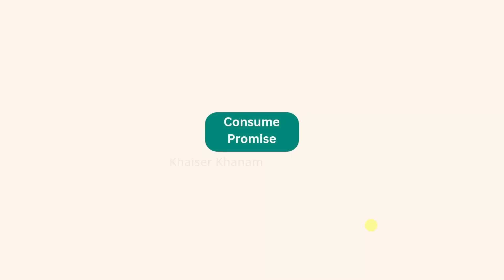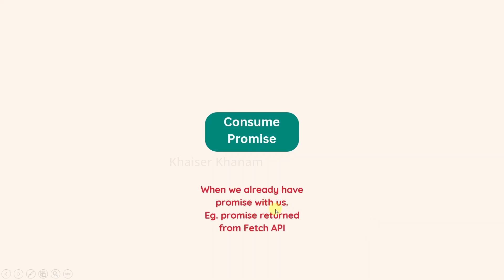In our last lecture, we understood about promises and we saw that the fetch function was returning a promise. Usually what we do there is consume the promise. So in almost all the cases using the fetch function, we consume the promise — we will not be building the promise. In the background, the promise is built, but when using fetch, it returns the promise and we just consume it.